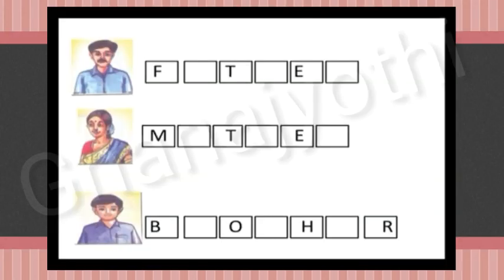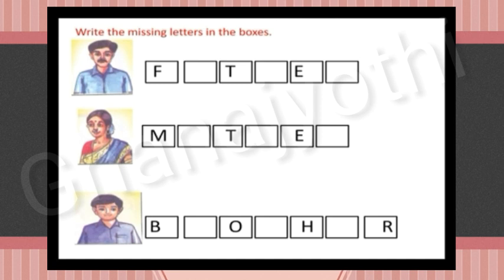In this video let us continue Unit 6: Family, and complete the remaining exercises of this unit. The first exercise is to write the missing letters in the boxes to complete the word.